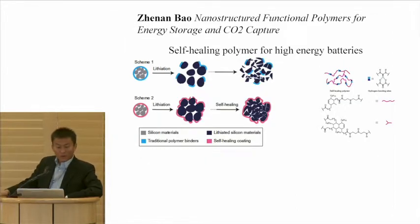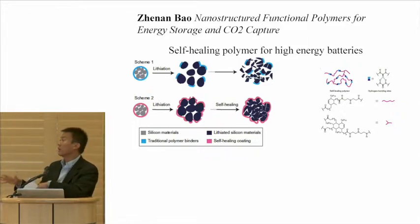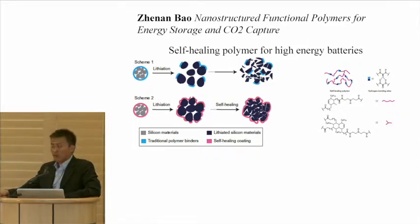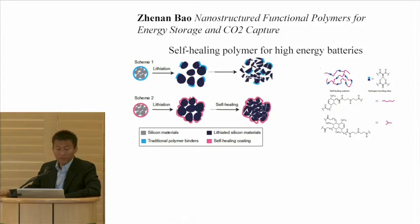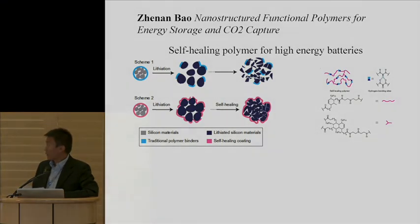Zhenan Bao will be talking about polymers applied to new types of applications. One example is the self-healing idea: based on her group's research on how skin cells heal, she applied those ideas to the very challenging problem in batteries. For example, in silicon anodes, the volume expansion is huge and cracking is a big problem. By using a self-healing polymer, even when they break, the electrodes maintain long cycle life. With that, let's start with the first talk.